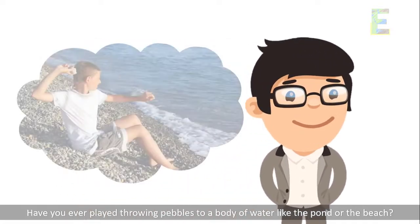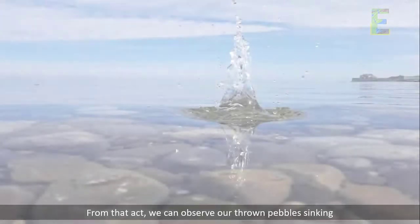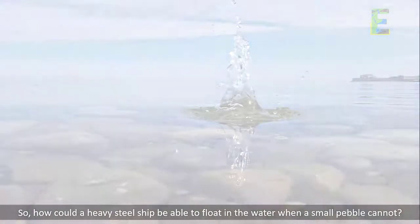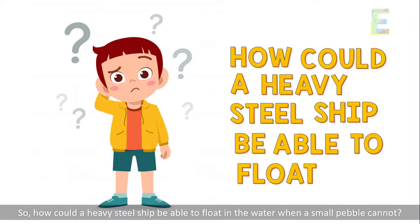Have you ever played throwing pebbles to a body of water like the pond or the beach? From that act, we can observe our thrown pebbles sinking. So, how could a heavy steel ship be able to float in the water when a small pebble cannot?